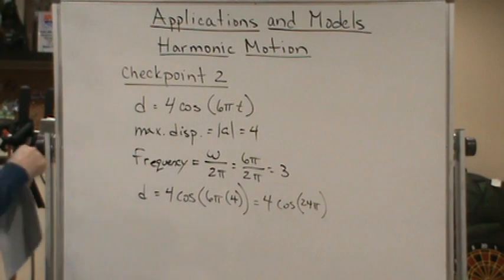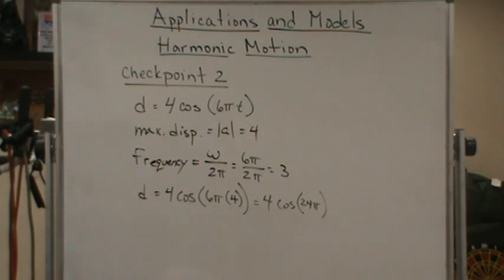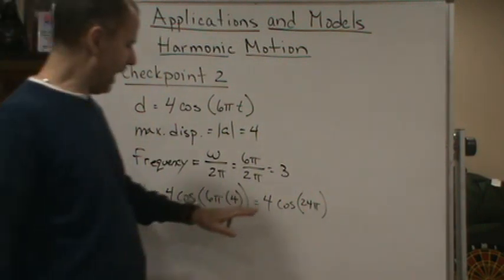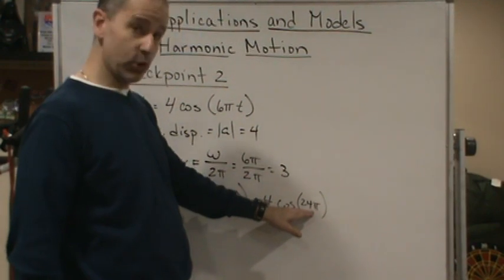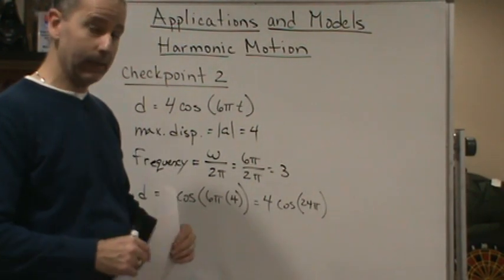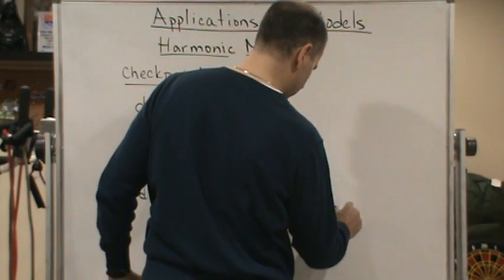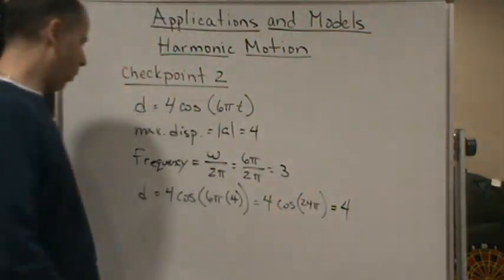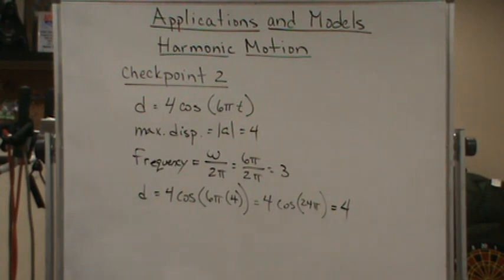Which is equal to 4 times the cosine of 24 pi. And so, well, we know that cosine is 1 at 0. And then every 2 pi, it's going to be at 1. So every cycle is going to go back to 1. And so here we have even, we could divide this by 2 pi. So cosine of 24 pi is going to be 1, which means the value of this thing is 4 when T is 4.